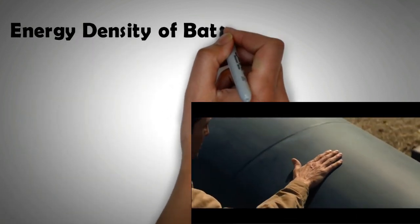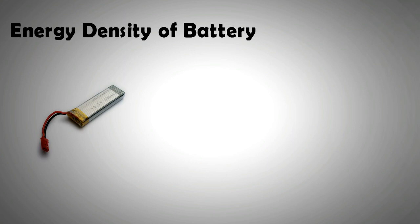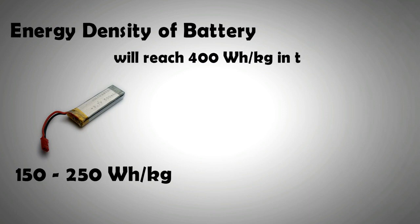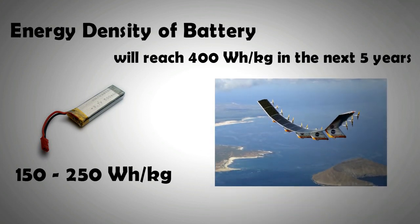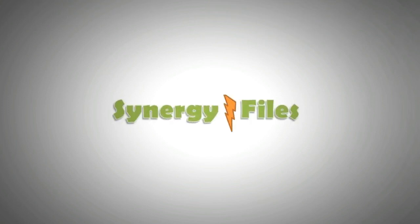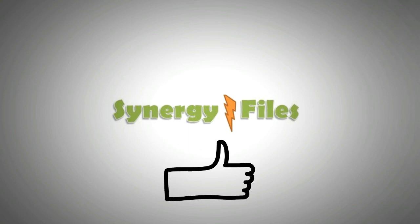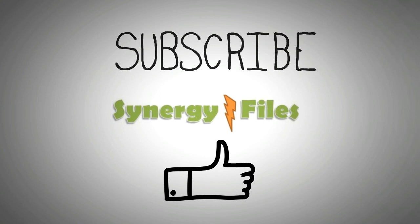Most batteries available in the market have reached an energy density range of 150 to 250 watt-hours per kg. The energy density of batteries could cross the 400 watt-hours per kg mark in the next five years, which would mean an increase in electric aviation. Electric aviation would also usher in more computerized flight control systems, including pilotless flights. With that, this video on drone technology and its future is concluded — please like it, subscribe to the channel, and watch for free vouchers for our online courses.